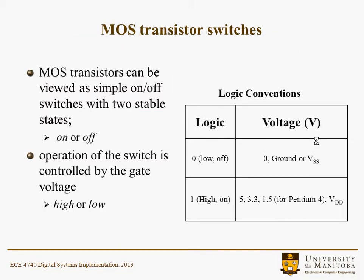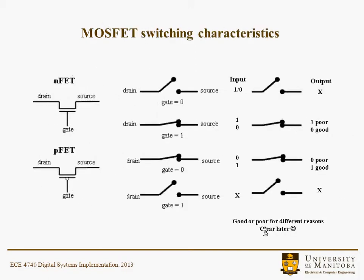MOS transistor switches can basically be viewed as simple on or off — not 100% accurate, but close enough for our purposes. The operation of the switch is controlled by a voltage on the gate, which would be high or low. Typically, a logic 0 might be a low voltage — the device might be off if it's an N-type transistor — representing ground or VSS. A logic 1 or high would be on, perhaps 5, 3.3, or 1.5 volts, typically represented as VDD.